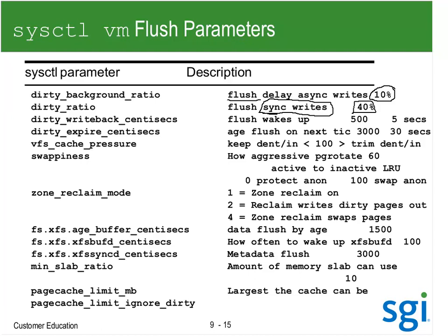The flush daemon is saying: 10% of my memory is dirty, I better start flushing so it doesn't get too dirty. But when it got up to 40%, it says I am way too dirty - stop writing data, put the processes to sleep. You don't want more than 40% of your memory dirty. The maximum it can go is 50, and background ratio minimum is 5. We now also have it available by bytes rather than percentage.